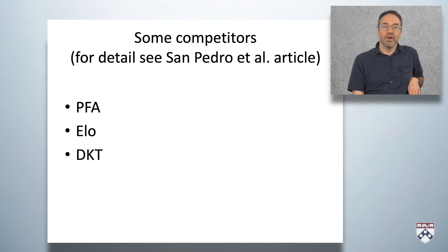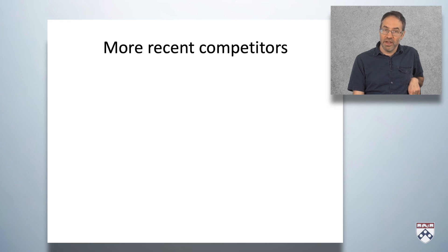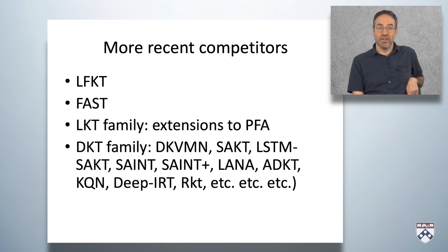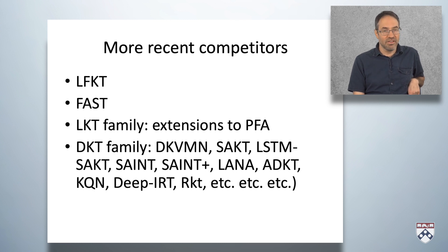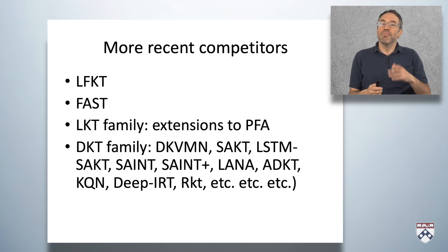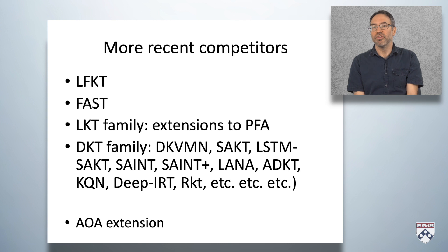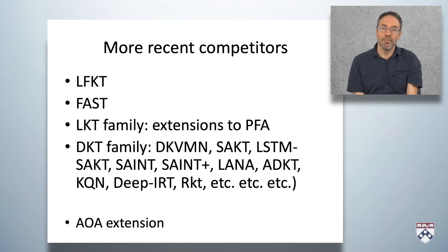More recent competitors include LFKT (Learning Factors Knowledge Tracing), FAST, the LKT family's extensions to PFA, and the extensive DKT family — including such luminaries as DKVMN, SACT, LSTM-SACT, SAINT, SAINT+, LANA, ADKT, KQN, DeepIRT, RKT, and probably 17 others since I recorded this video. Also important is the AOA extension, which takes models designed to predict performance in the system rather than infer latent knowledge, and puts a wrapper on top so they can also be mapped back to interpretable skills.